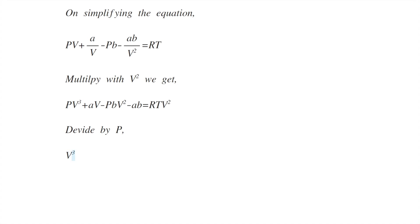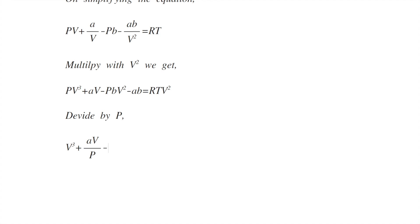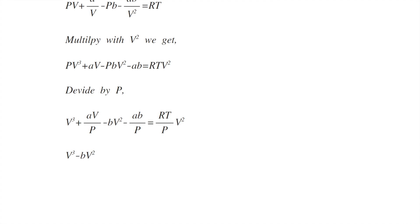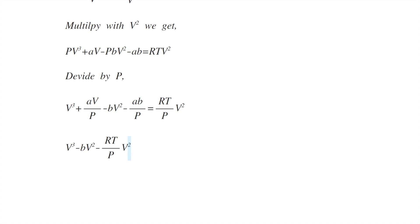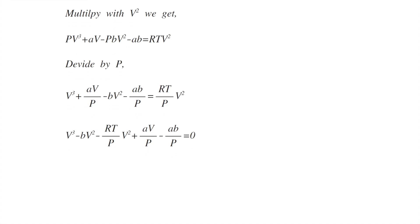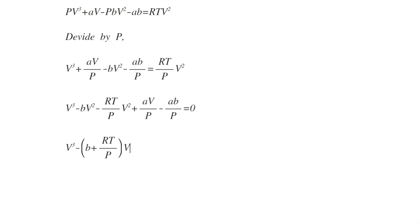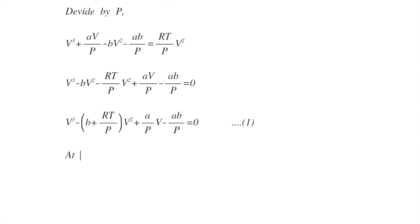Now dividing by p we get v³ + av/p - bv² - ab/p = (RT/p)v². Simplifying and rearranging, we get v³ - (b + RT/p)v² + (a/p)v - ab/p = 0. This is equation 1.